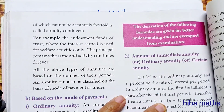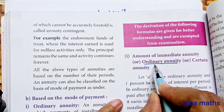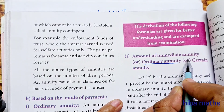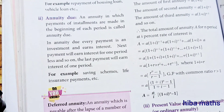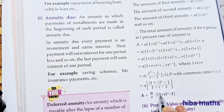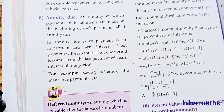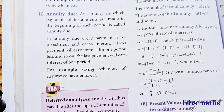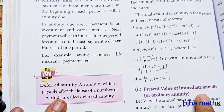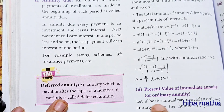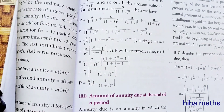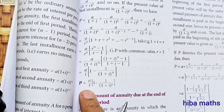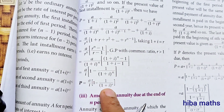We will talk about ordinary annuity — the amount of immediate annuities or certain annuity. The formula is: A equals a by i, times (1 plus i) to the power n, minus 1. We will also talk about the present value of immediate annuity, with formula: P equals a by i, times 1 minus 1 by (1 plus i) to the power n.